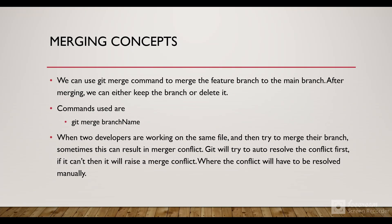We use the 'git merge' command to merge the feature branch into the main branch. After merging, we can either keep the branch or delete it. The command is 'git merge <branch-name>', where the branch name is the branch we want to merge into the current branch. A situation can arise where two developers are working on the same file and try to merge their branches - this can result in a merge conflict.